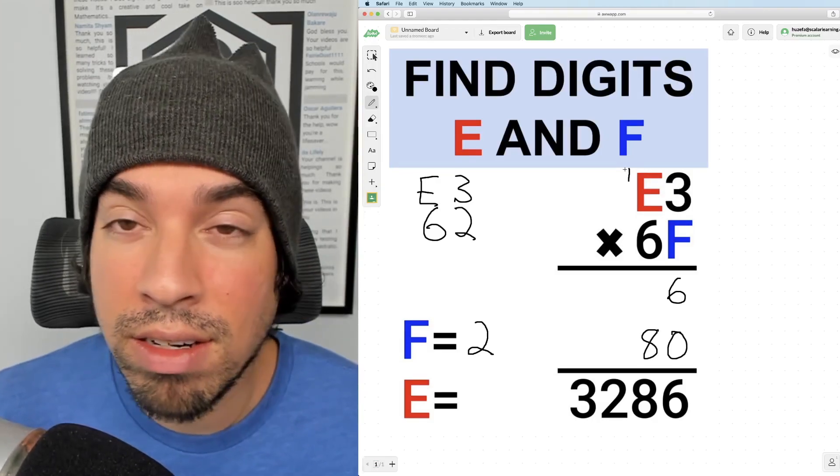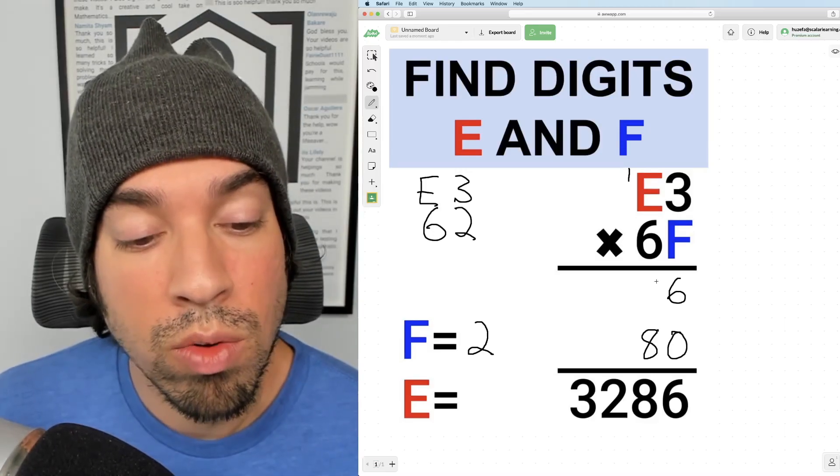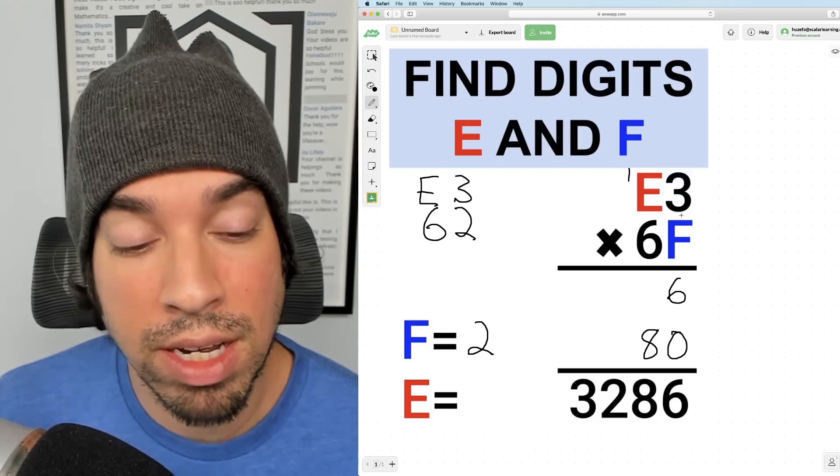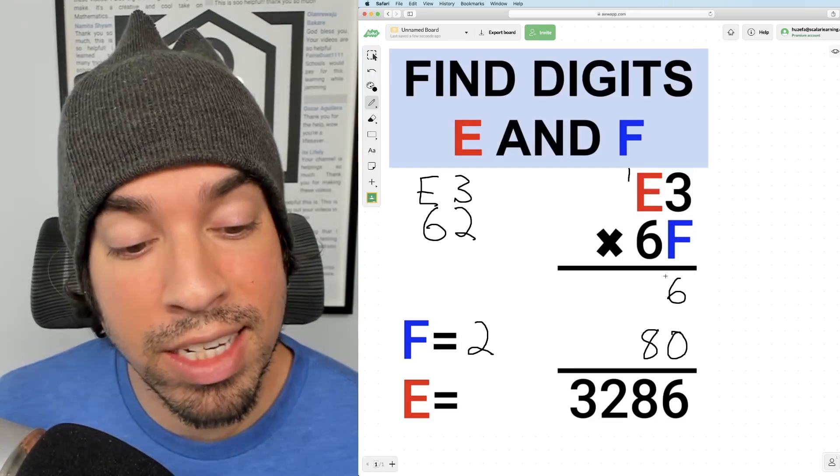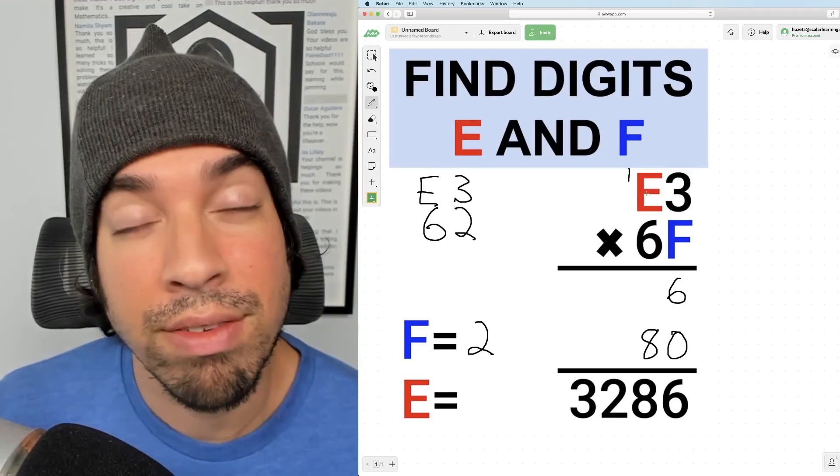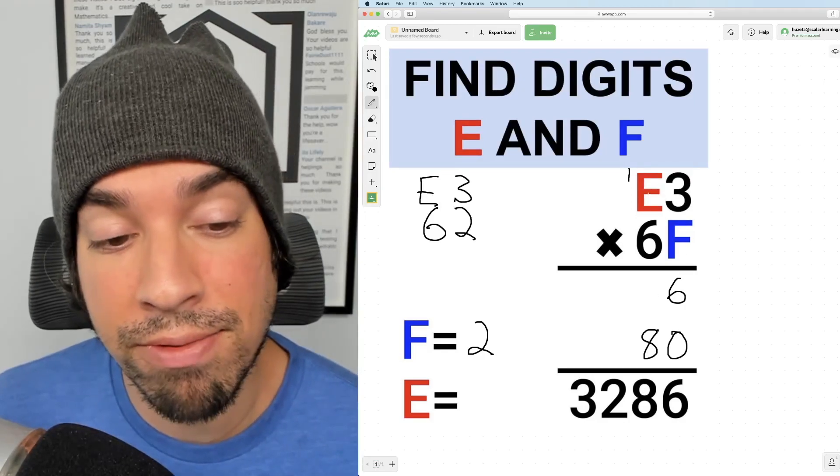Now this right here is enough and I'll tell you why. We know that this digit right here has to be a 0 when we multiply F times E. And that has to be the case because 0 plus 8 will give us that 8 at the bottom. There's only two ways we can get an 8. If E is a 0 or if E is a 5.